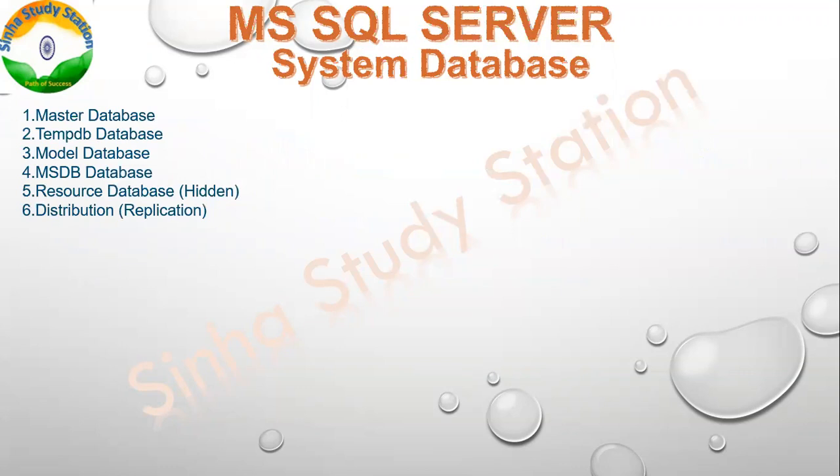Now we see what the system databases are. In our system database, the main ones are four: Master database, TempDB database, Model database, and MSDB database.